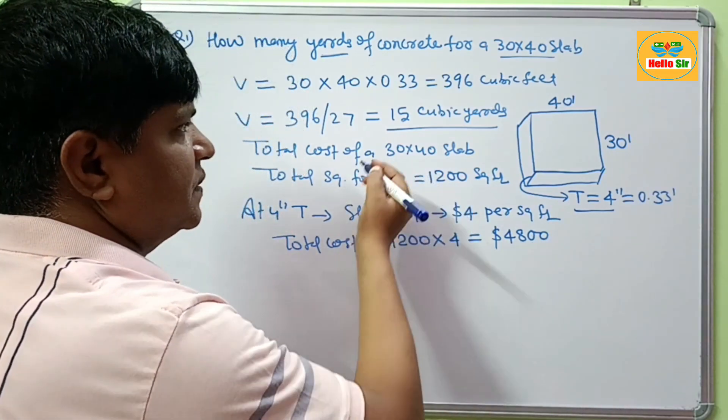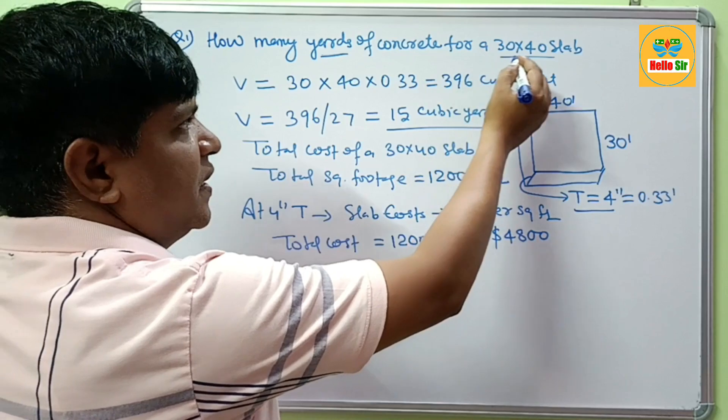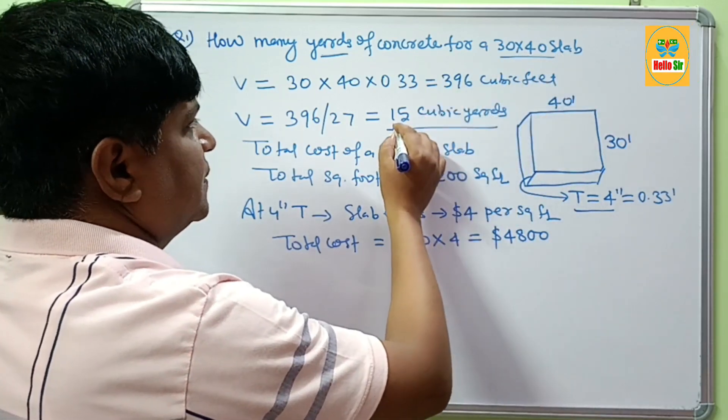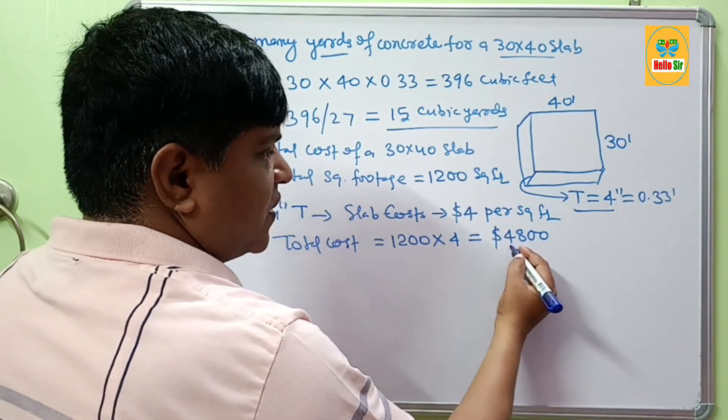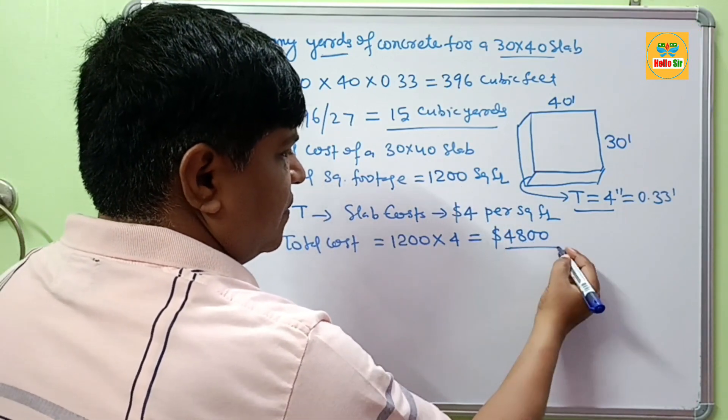So for a 30 by 40 slab, you need 15 cubic yards of concrete and it may cost about $4,800. Thank you.